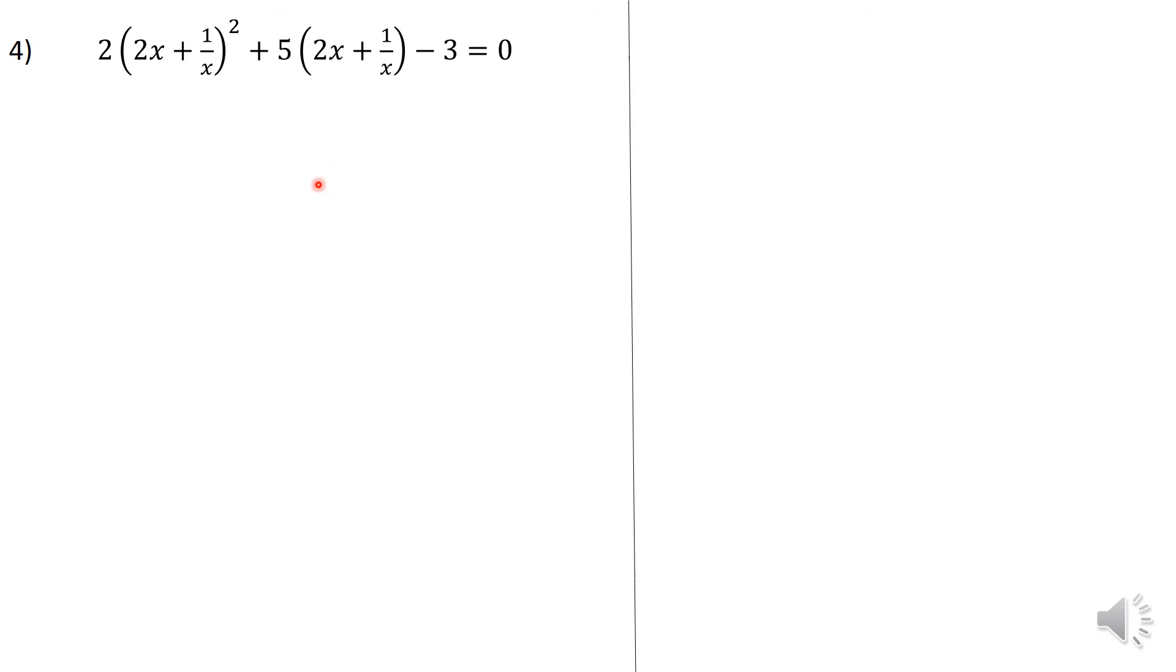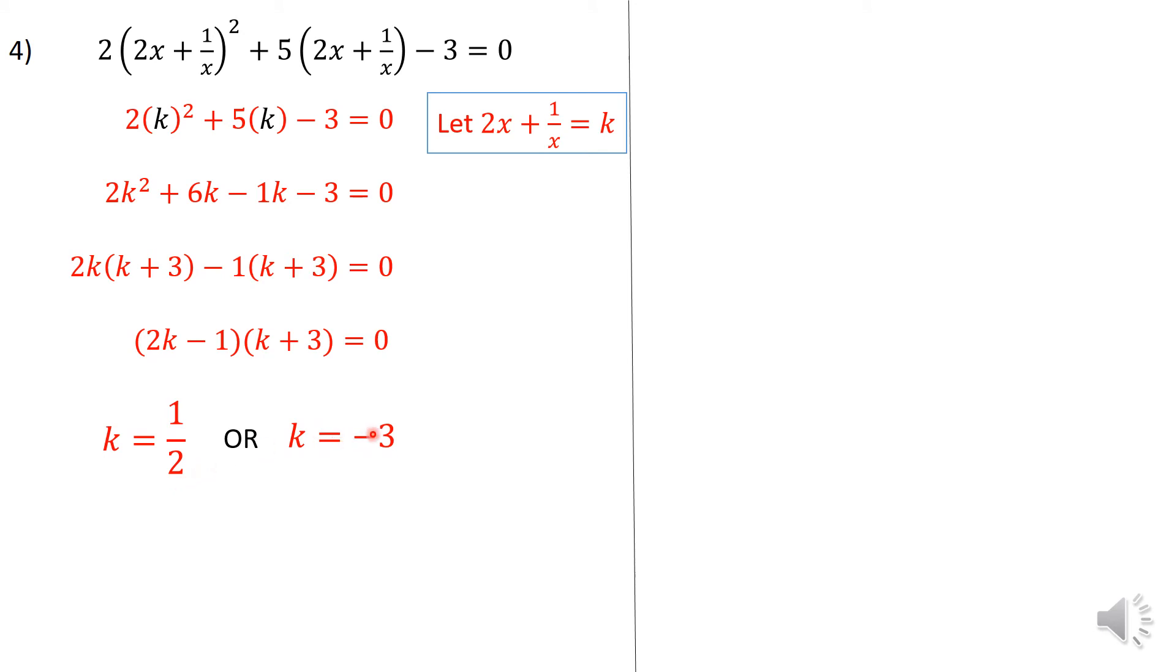The fourth one is a little bit tricky because it's quite long and you need to have patience whenever you're dealing with this particular question. So I'm starting right off to say that stuff there in the bracket, I'm just going to let it equal to some constant and I can then easily deal with that quadratic. So it factorizes to (2k - 1)(k + 3) = 0. So I can actually now calculate the values of k. k = 1/2 or k = -3. Again, I'm not looking for the value of k, that was just a method, so I'm going to bring back that 2x + 1/x. So the two possibilities will be 2x + 1/x = 1/2 or 2x + 1/x = -3.